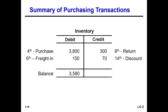Summary of purchase transactions: gross purchases $3,800, less purchase return of $300, plus freight-in, less purchase discount of $70 — giving an inventory balance of $3,580.